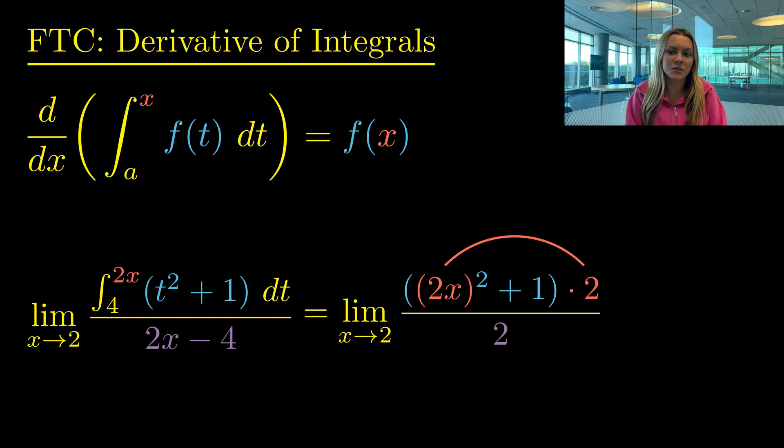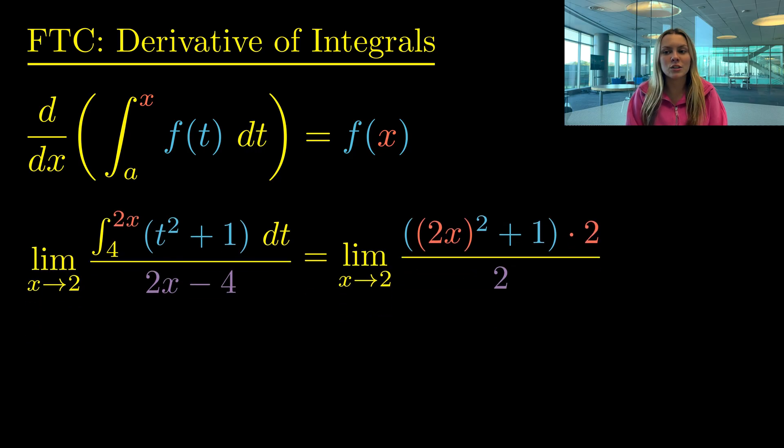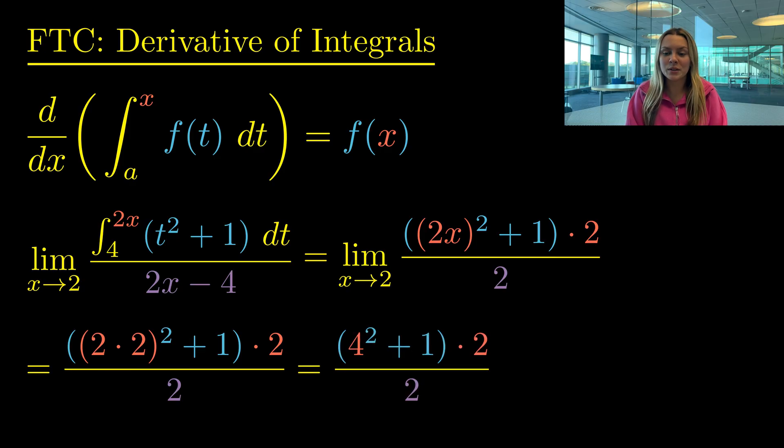Now that we have gotten rid of our integral, let's finish our limit by plugging in 2 for x. And 2 times 2 is 4, and 4² plus 1 is 17. And these 2s cancel, so our final answer is 17. So FTC comes to the rescue any time we are taking a derivative of a function defined as an integral, like while using L'Hôpital's rule.